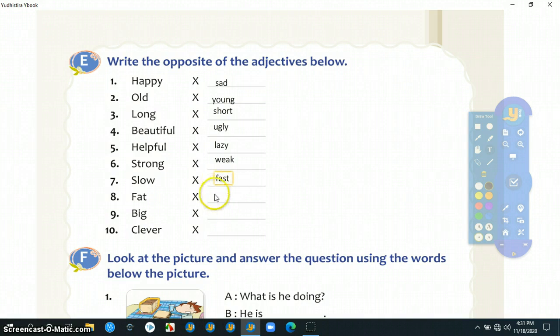Fat lawan katanya thin. Big lawan katanya small. Clever lawan katanya stupid. Ini di inget-inget ya, jadi lawan kata atau arti yang berlawanan.